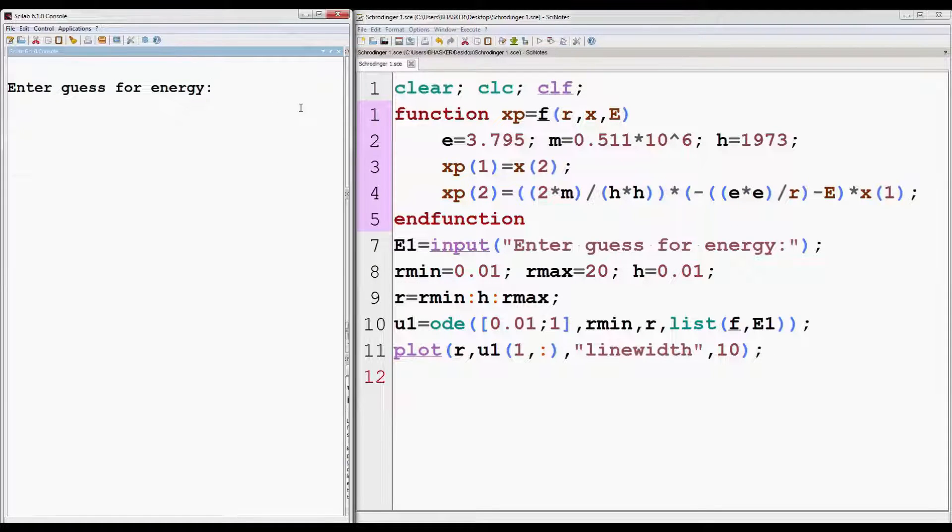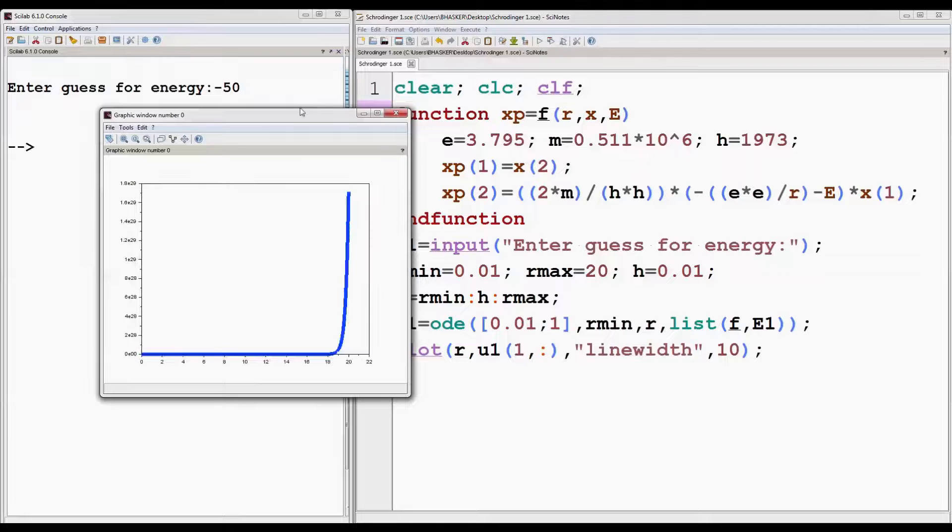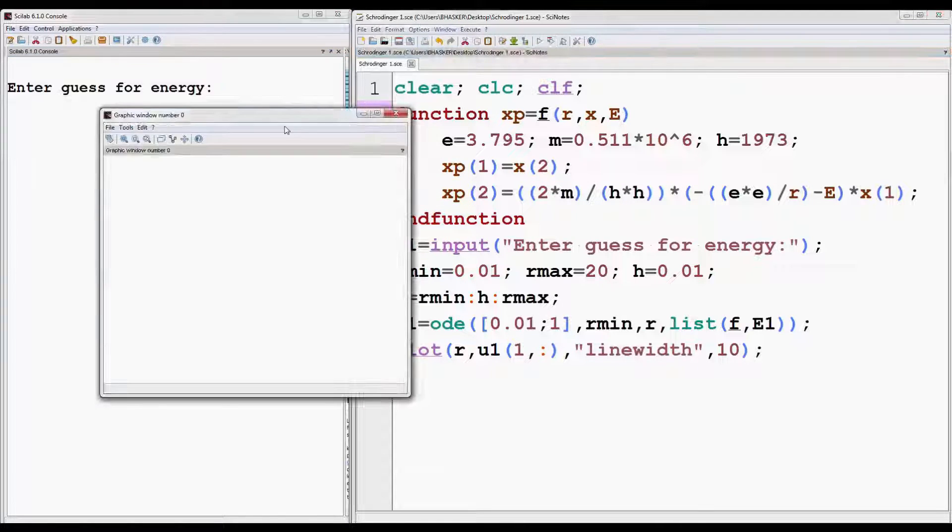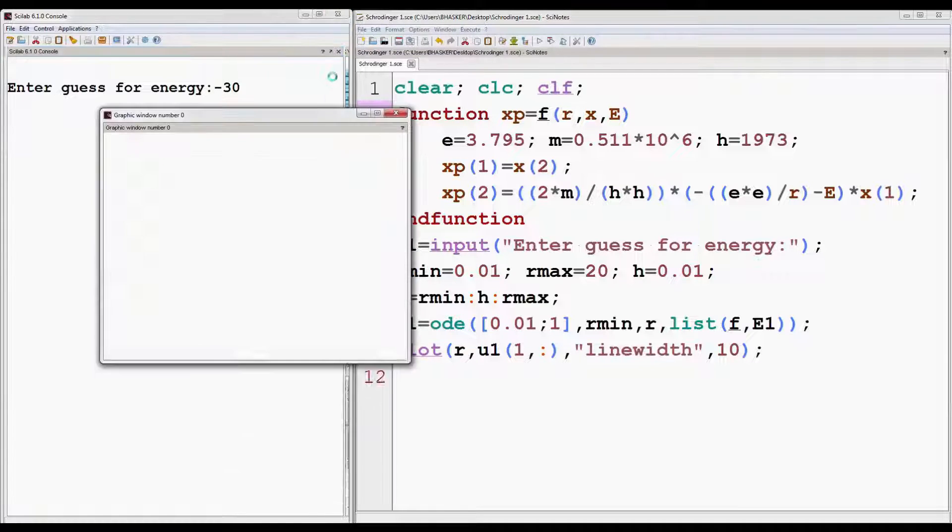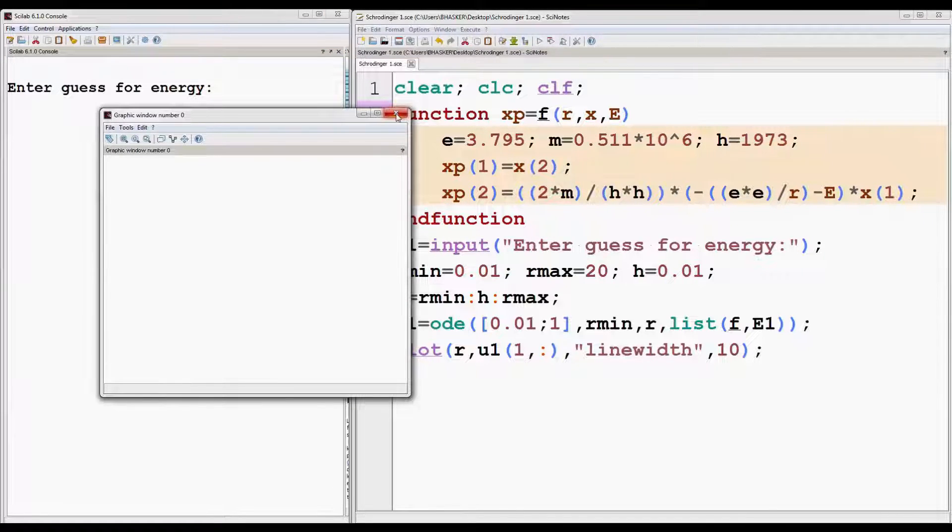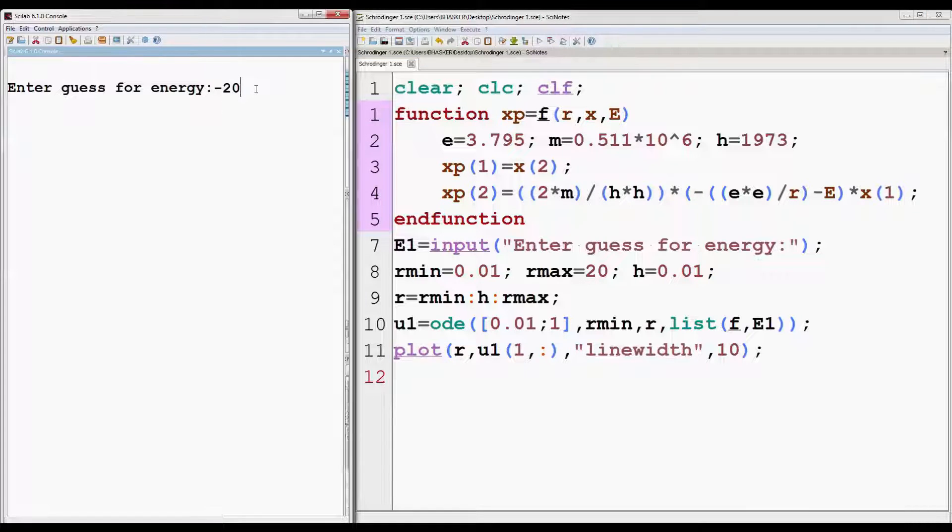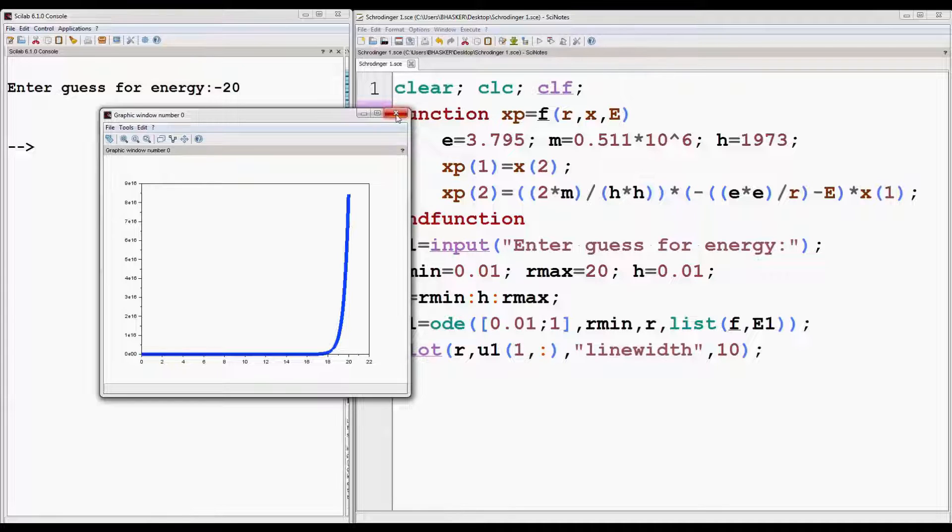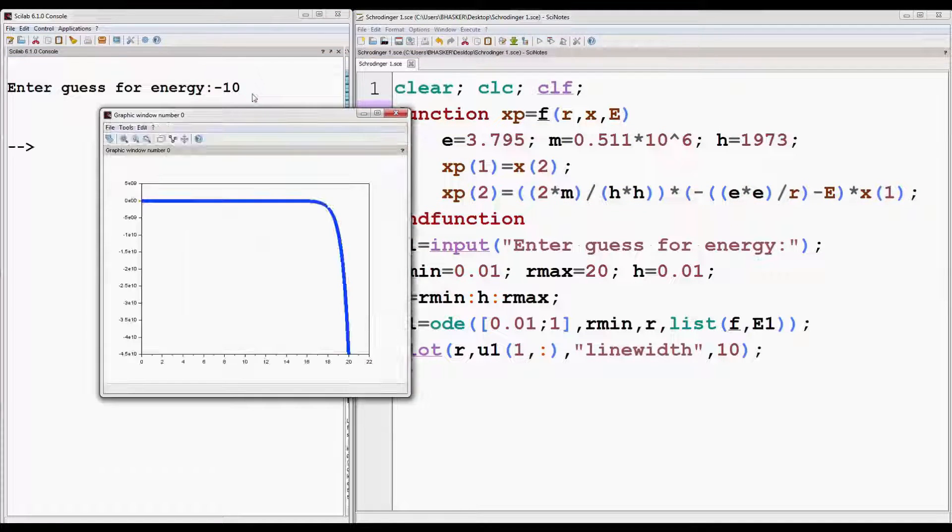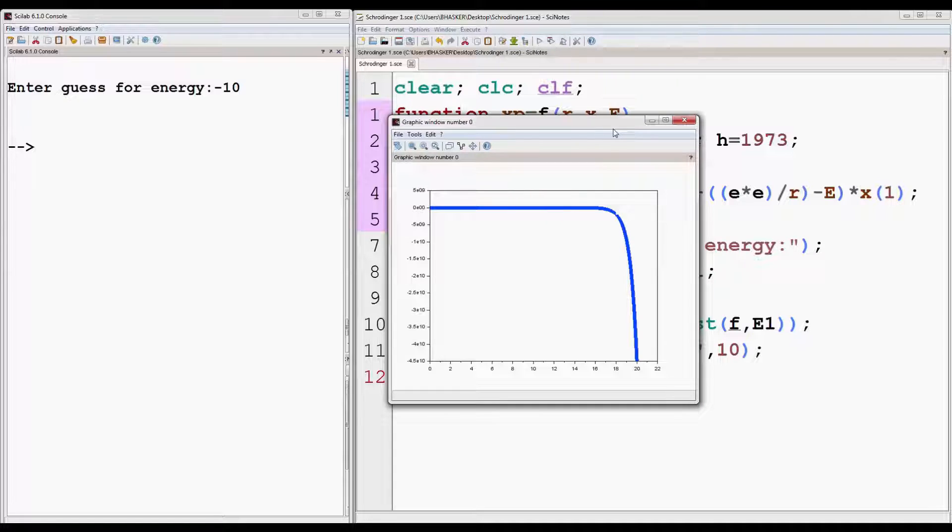So it's asking for the energy. Let's first give a value minus 50. So the graph is approaching plus infinity. Again run the program and give the value minus 30. Again it's going to plus infinity. Again run it for minus 20 and it's again going to plus infinity. Now set the value to minus 10. Now the curve is moving towards minus infinity. Sign has been changed from plus to minus infinity by changing energy from minus 20 to minus 10 electron volts. So ground state energy is somewhere between minus 10 and minus 20 electron volts.